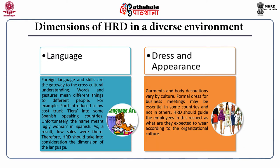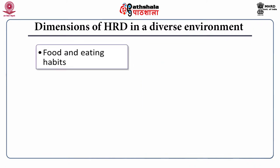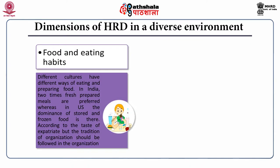Another dimension is dress and appearances. Garments and body decorations vary by culture. Formal dress for business meetings may be essential in some countries but not in others. HRD should guide employees on what is expected to be worn according to the organisational culture. Another dimension is food and eating habits. Different cultures have different ways of eating and preparing food. In India, freshly prepared meals are preferred twice a day, whereas in the US, stored and frozen food is dominant. The tradition of the organisation should nonetheless be followed.